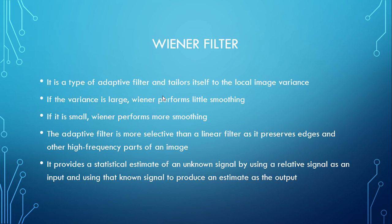The Wiener filter is a type of adaptive filter that tailors itself to the local image variance. If the variance is large, it performs little smoothing, but if it is small, it performs more smoothing. The adaptive filter is more selective than a linear filter as it preserves edges and other high-frequency parts of an image. It provides a statistical estimate of an unknown signal by using a related known signal as input to produce an estimate as the output.